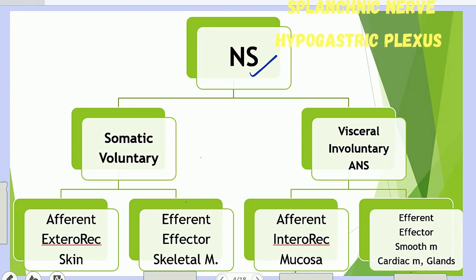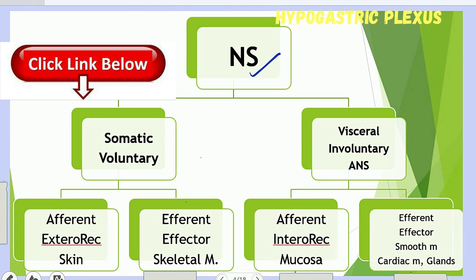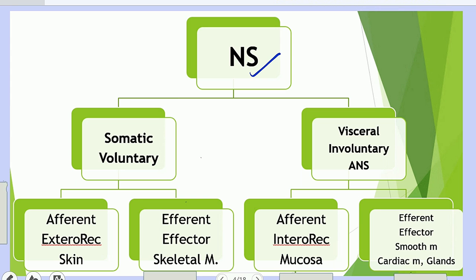First of all, I'll talk about the classification of the nervous system. The detail of this classification is given in my first two lectures. The nervous system is functionally divided into the somatic nervous system, or the voluntary nervous system, and the visceral nervous system, also known as the involuntary nervous system or the autonomic nervous system. Each division — somatic and visceral — has both an afferent division and an efferent division: a sensory component and a motor component.